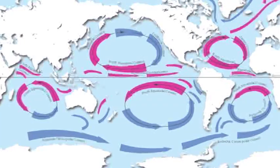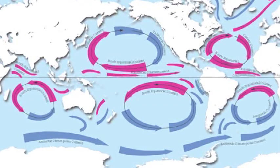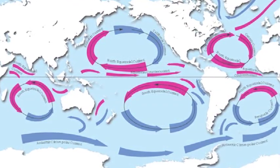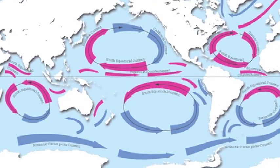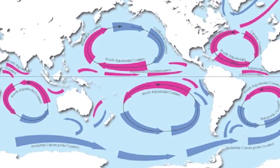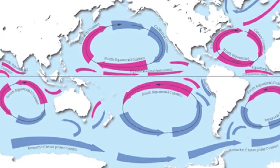What you really need to see are the circulation cells, and what causes those winds — it is the return of a big circulation cell.